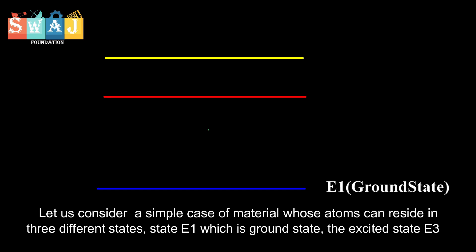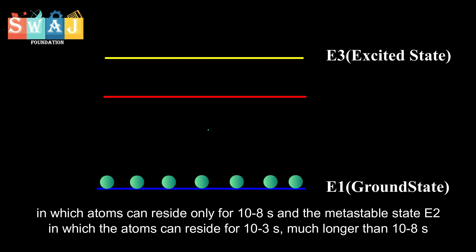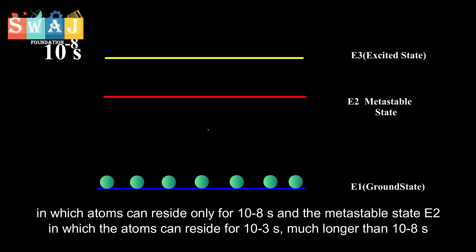State E1 which is the ground state, the excited state E3 in which the atoms can reside only for 10 to the power minus 8 seconds, and the metastable state E2 in which the atoms can reside for 10 to the power minus 3 seconds, much longer than 10 to the power minus 8 seconds.